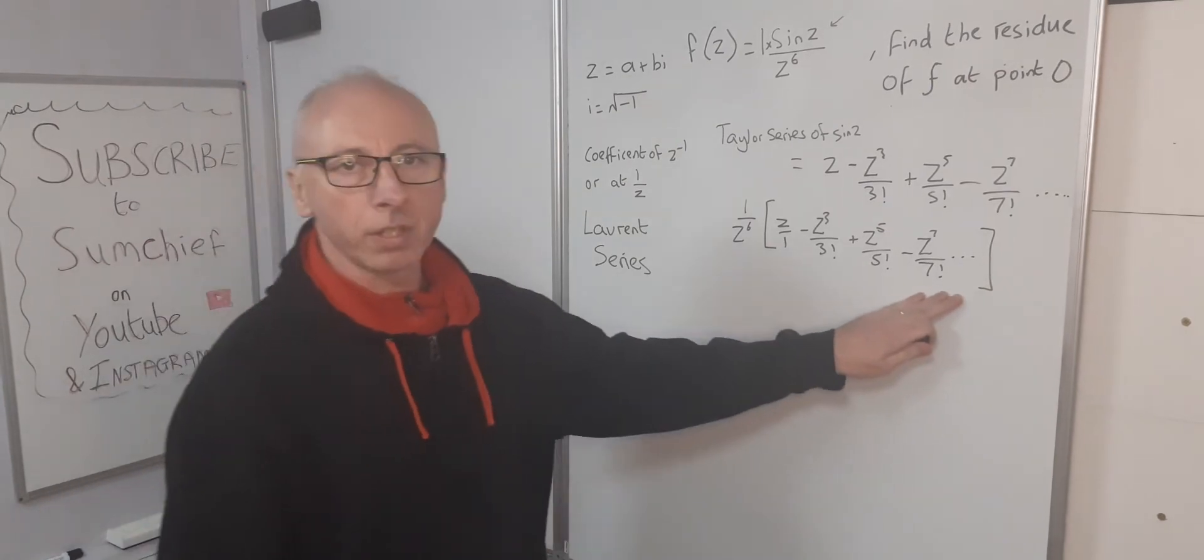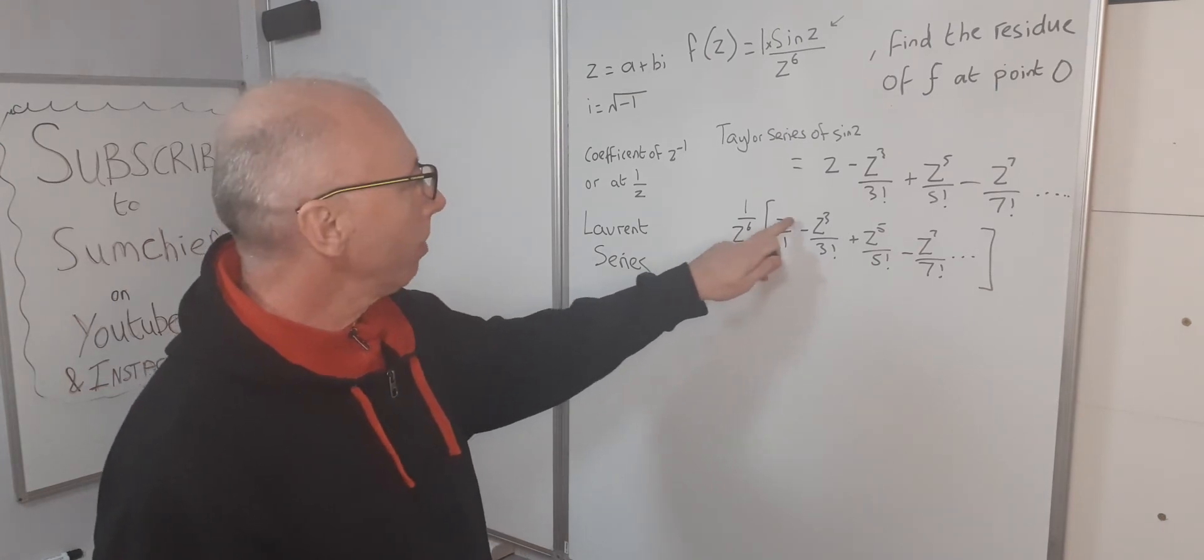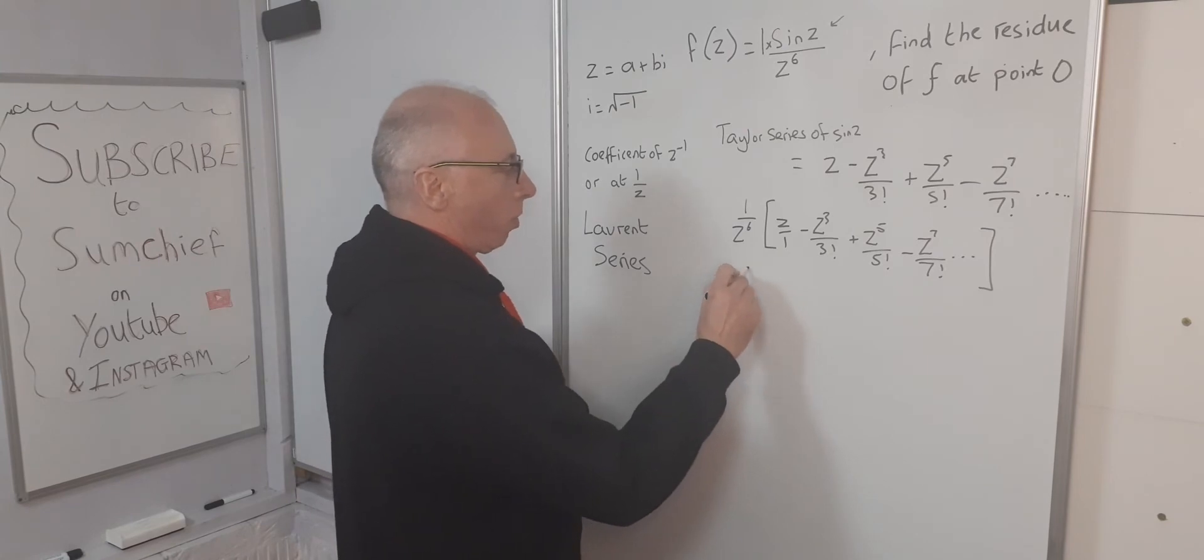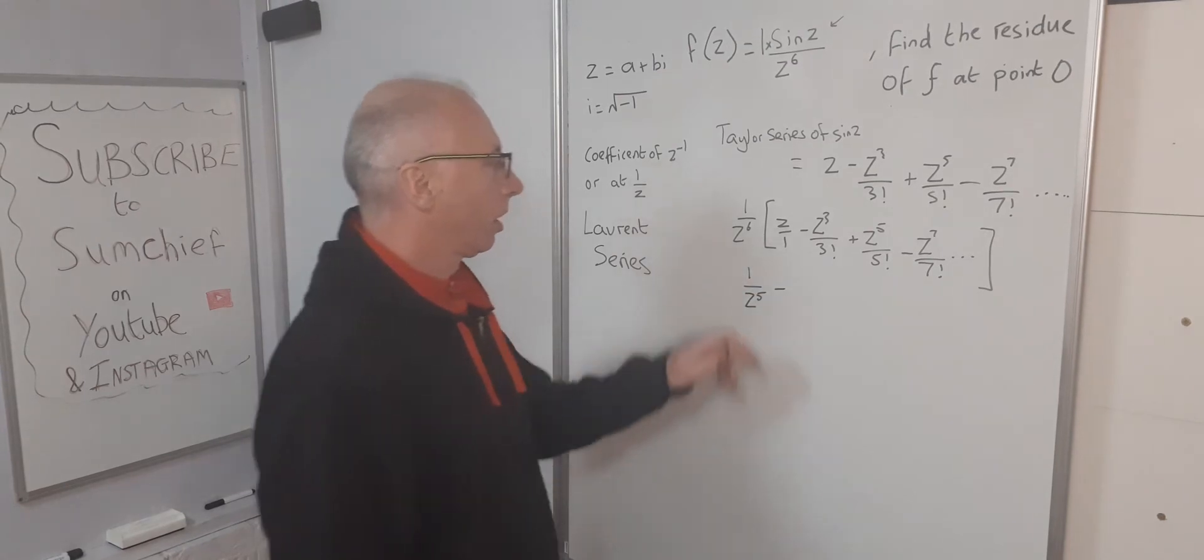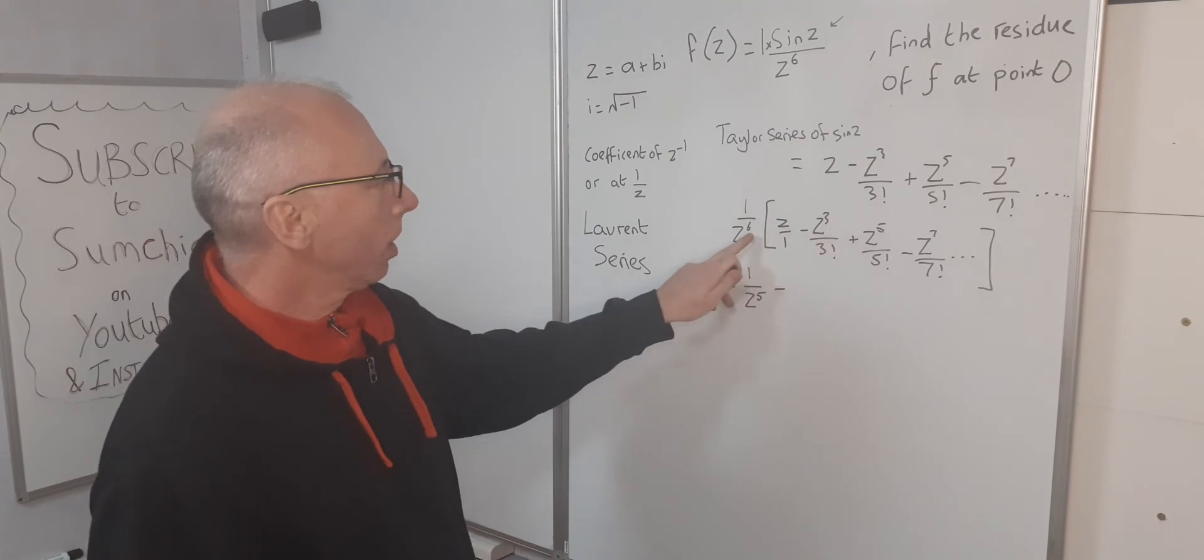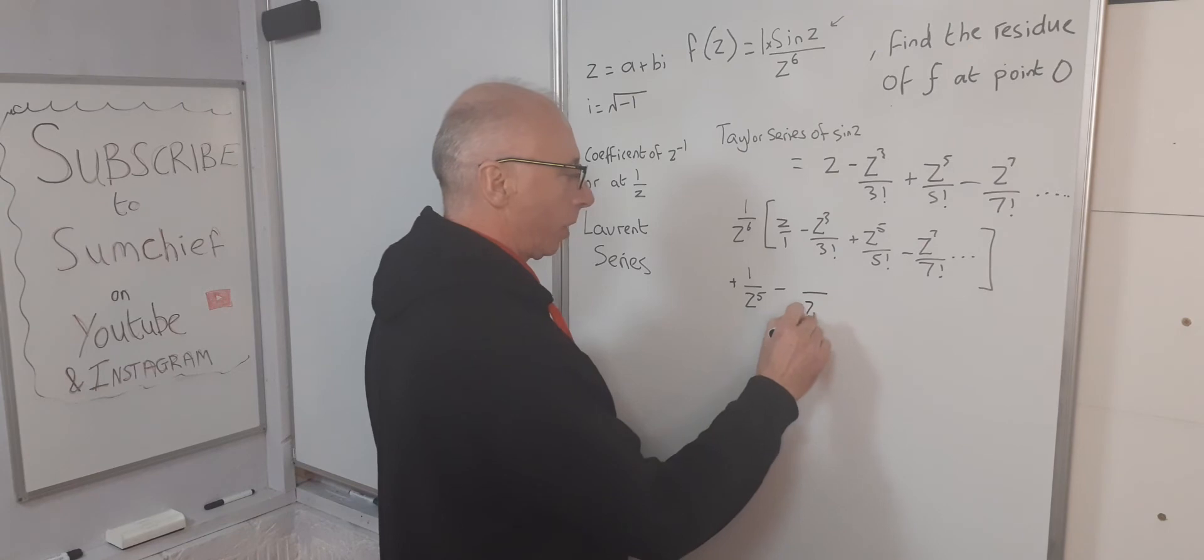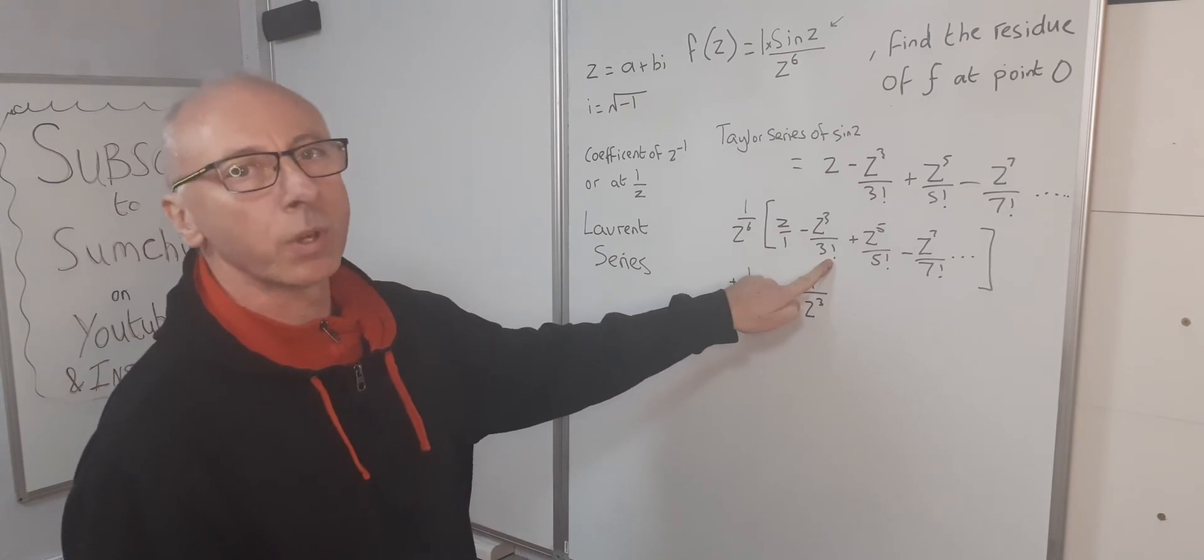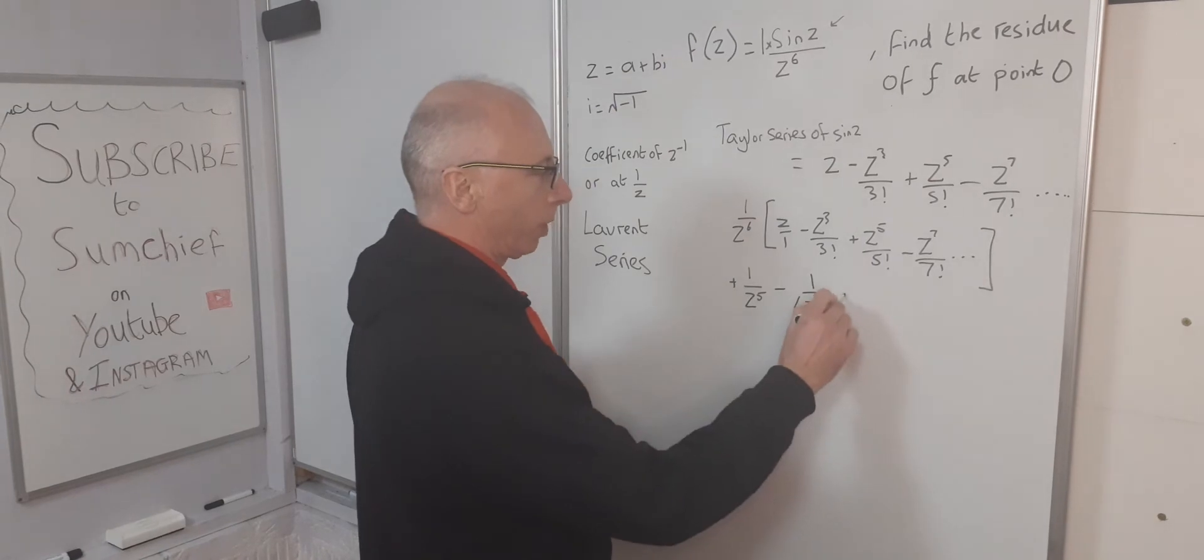Now we've got this equation here we need to sort out, so let's go through each term one at a time. z divided by z to the 6 will give us 1 over z to the 5. Then z cubed divided by z to the 6 gives us z to the 3 on the bottom, with a positive sign. 3 factorial is 1 times 2 times 3, so that's 6.